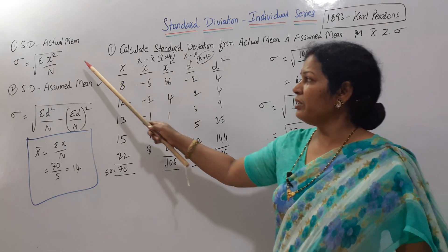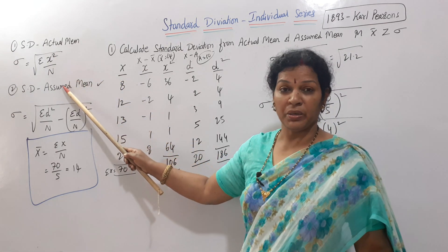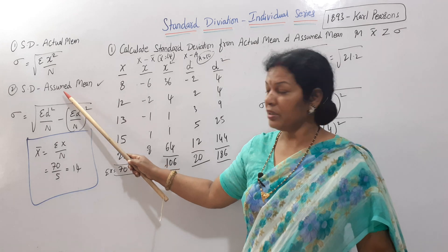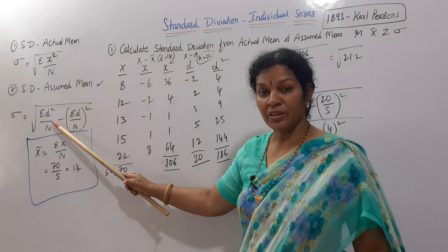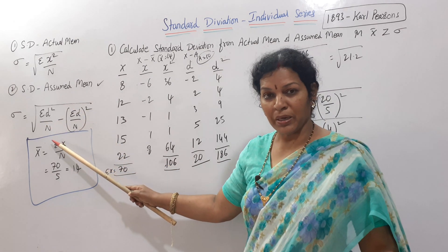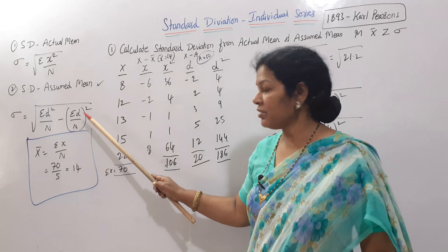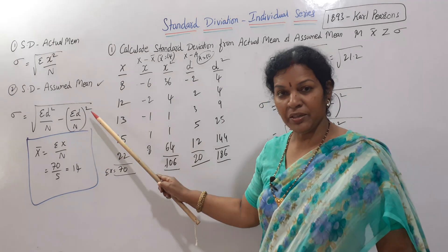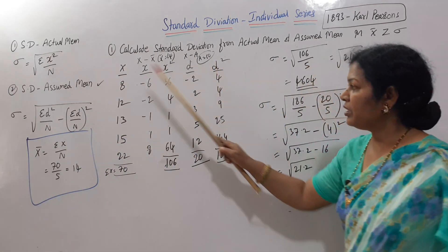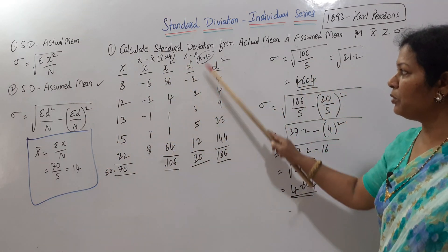So anyway, for the actual mean method use: rho = root of sigma x² / n. For the assumed mean method use: rho = root of sigma D² / n − (sigma D / n)². Both formulas give the same answer. In practice, fill in the columns accordingly.